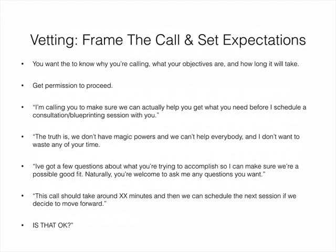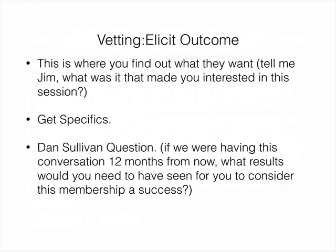Now you're going to elicit the outcome — find out what they want. You say, 'Tell me, Jim, what is it that made you interested in this session?' Get them to tell you in specifics. Then follow up with the Dan Sullivan question — that's actually the name of the book, 'The Dan Sullivan Question,' about twelve bucks on Amazon. The question is: 'If we were having this conversation twelve months from now and you were looking back over these last twelve months, what results would you need to see for you to consider this a success?'